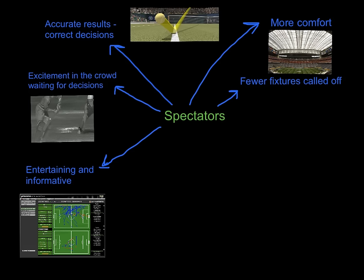With technology like Hawkeye and hot spot in cricket, we're getting accurate results and correct decisions — which as a spectator is what you want. You don't want to feel like you or your team have been cheated. But also it generates excitement in the crowd. When you watch Wimbledon, all the crowd are waiting to see whether the ball was in or out, watching the snickometer and hot spot. You're almost part of the decision-making, and it can even be a discussion point if you're watching as part of a group.